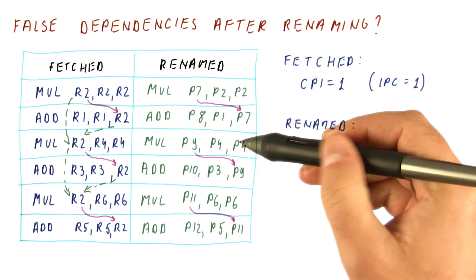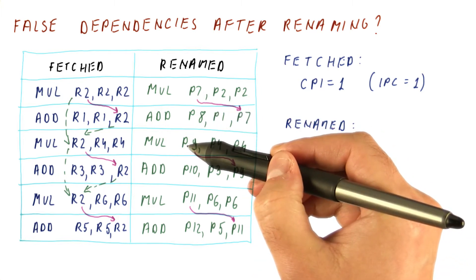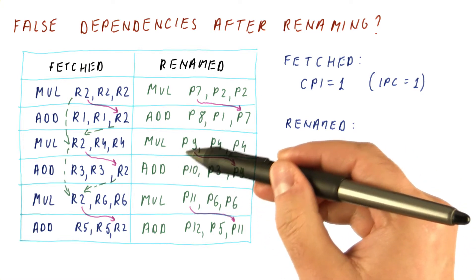For our renamed program, however, this anti-dependence is no longer there. This output dependence is no longer there. There is no anti-dependence here, and there is no output dependence here.